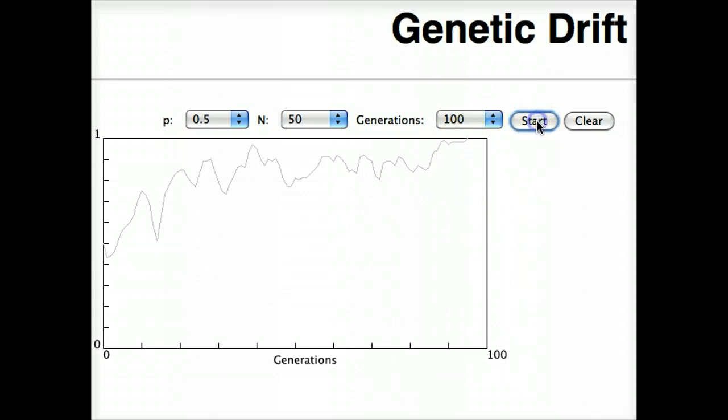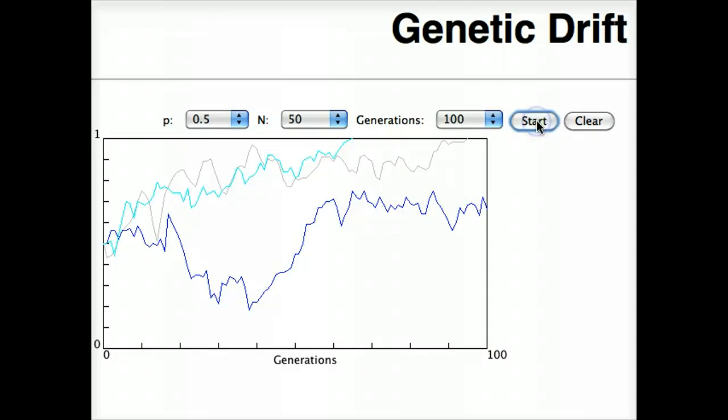We can do another experiment. In this experiment, neither allele was lost. Here's another one, where an allele was lost at about generation 65, and here's another one. So each push of the start button is a single experiment.